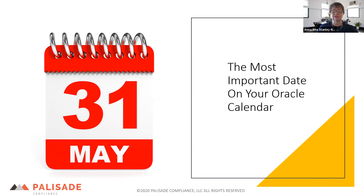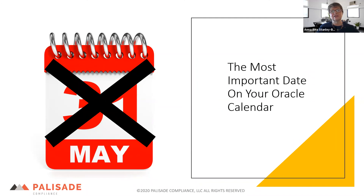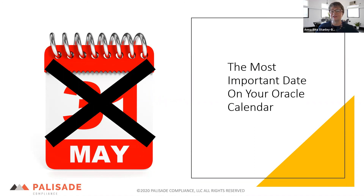May 31st is Oracle's important date, not necessarily yours. One way Oracle makes it feel important to you is if an opportunity isn't moving fast enough to close by end of May, Oracle will sometimes use — sometimes obvious, sometimes hidden — threats of audits. I actually just heard from a company in our region where Oracle is trying to move them to the cloud and sign a cloud contract before end of May, and they now received a threat of audit if they don't do this deal by May 31st.